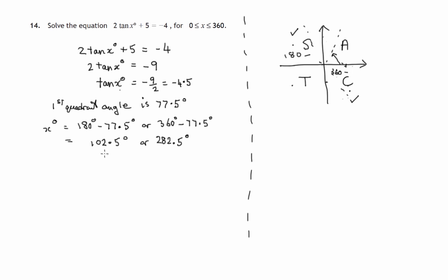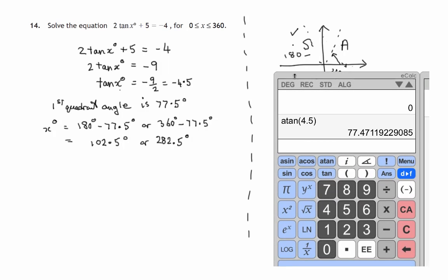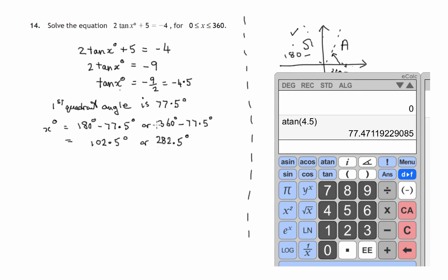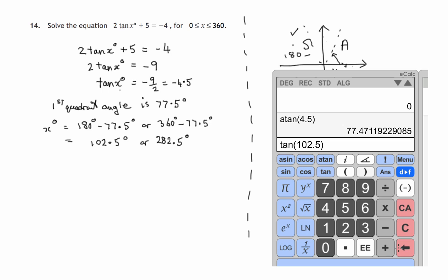So that's the two values that we get. Now if you have, well you do have a calculator in the exam, you'd be daft not to attempt to check these. If we do the tangent of 102.5, what do we get? We get 4.5, more or less. Remember we rounded off to the nearest, well in this case to one decimal place. So there's our negative 4.5 or correct there.